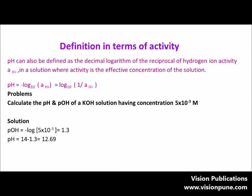Let's solve some problems based on this. The first problem: calculate the pH and pOH of a KOH solution having concentration 5 × 10⁻³. KOH dissociates to give K⁺ and OH⁻ ions. Therefore, the pOH will be equal to minus log of 5 × 10⁻³, which equals 1.3. So the pOH is 1.3.